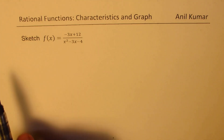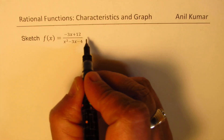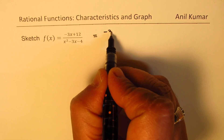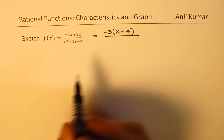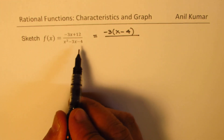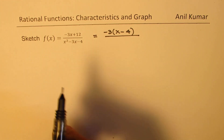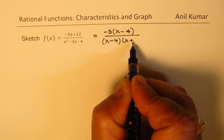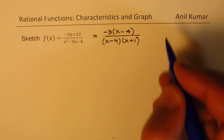Whenever you're given a rational function, the first thing is to factor. So let's factor this. We can factor out minus 3, and what we get in the numerator is (x minus 4). The denominator is a quadratic — product of minus 4, sum of minus 3 — so 4 times 1 works, giving us (x minus 4)(x plus 1). So we have factored it. That is your first step.